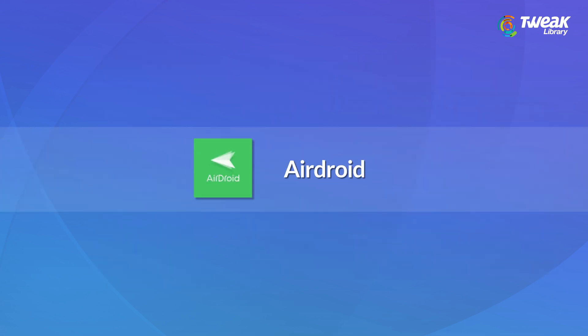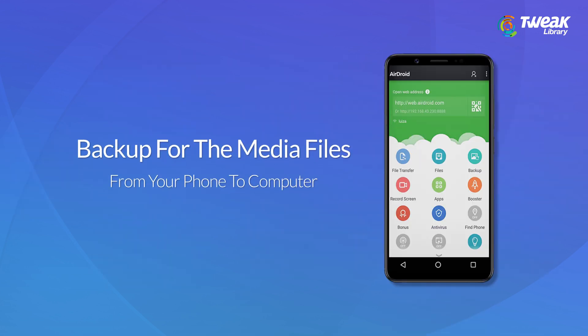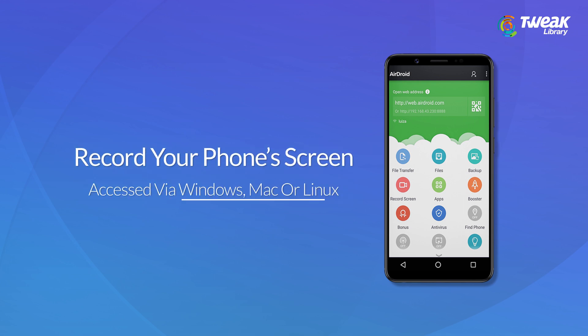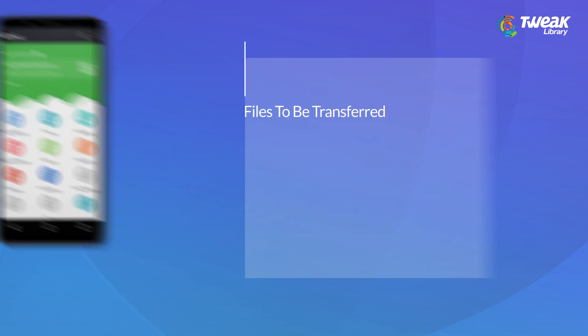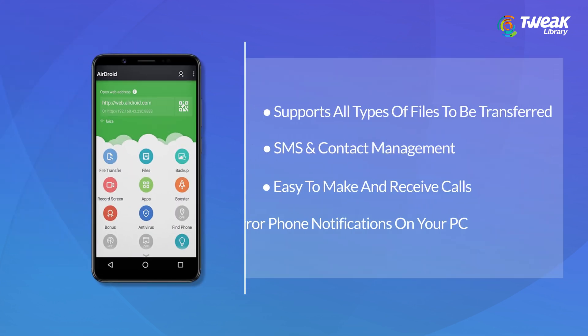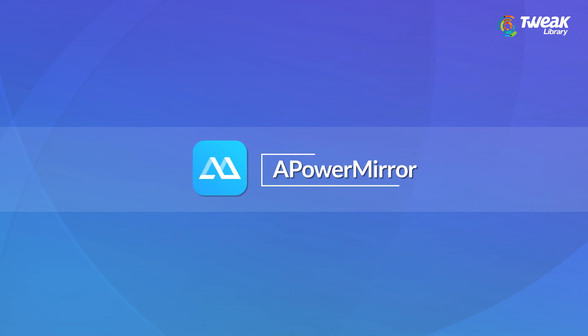Second is AirDroid. AirDroid allows you to take a backup of media files from your phone to your computer. You can record your phone screen while being accessed via computer — Windows, Mac or Linux. Supports all types of files to be transferred, SMS and contact management, easy to make and receive calls, and mirror phone notifications on your PC.